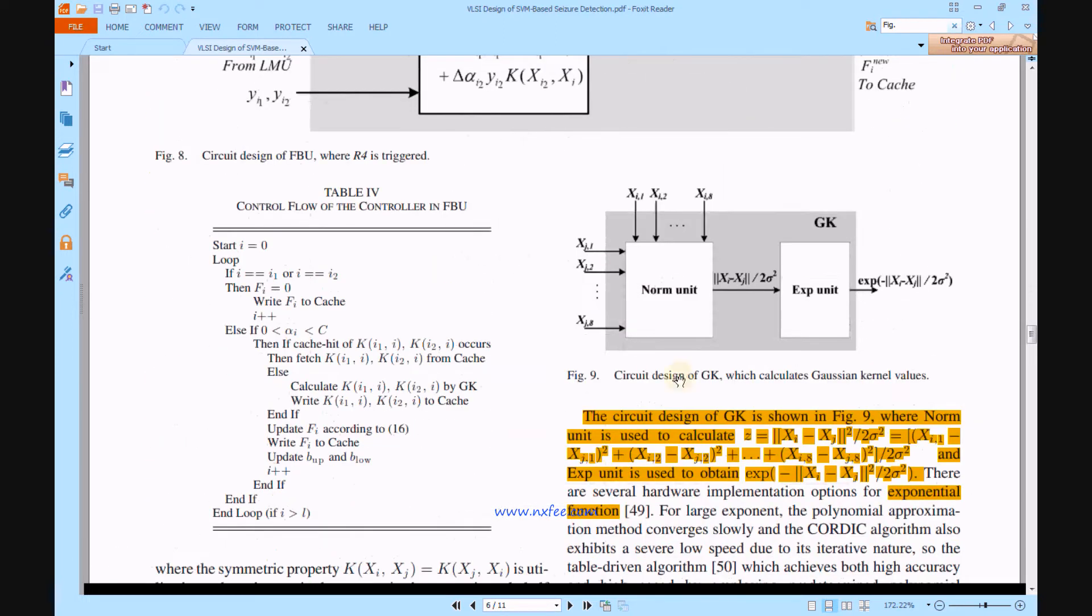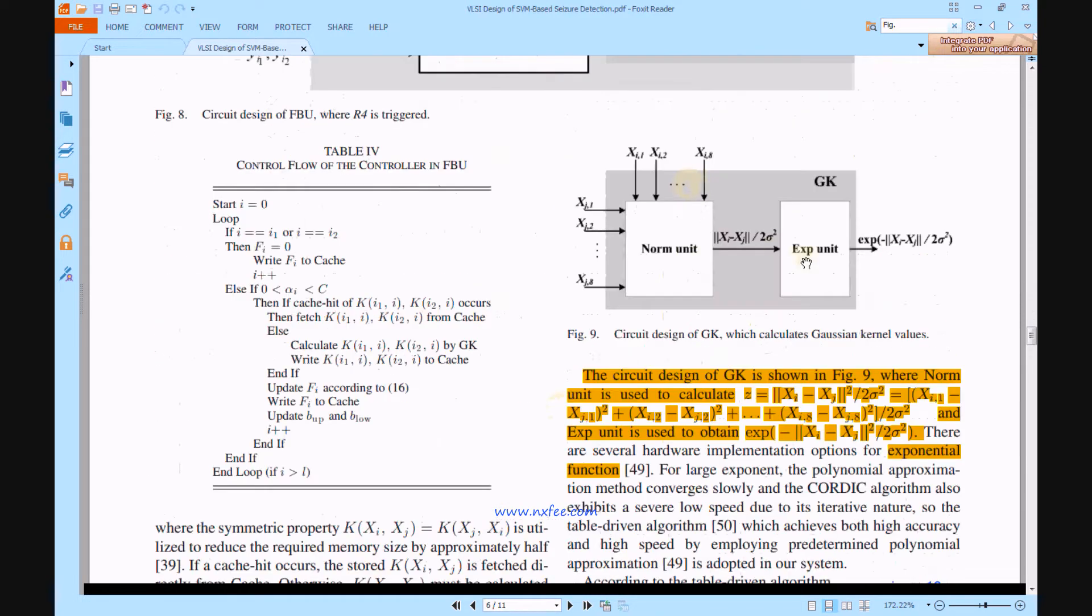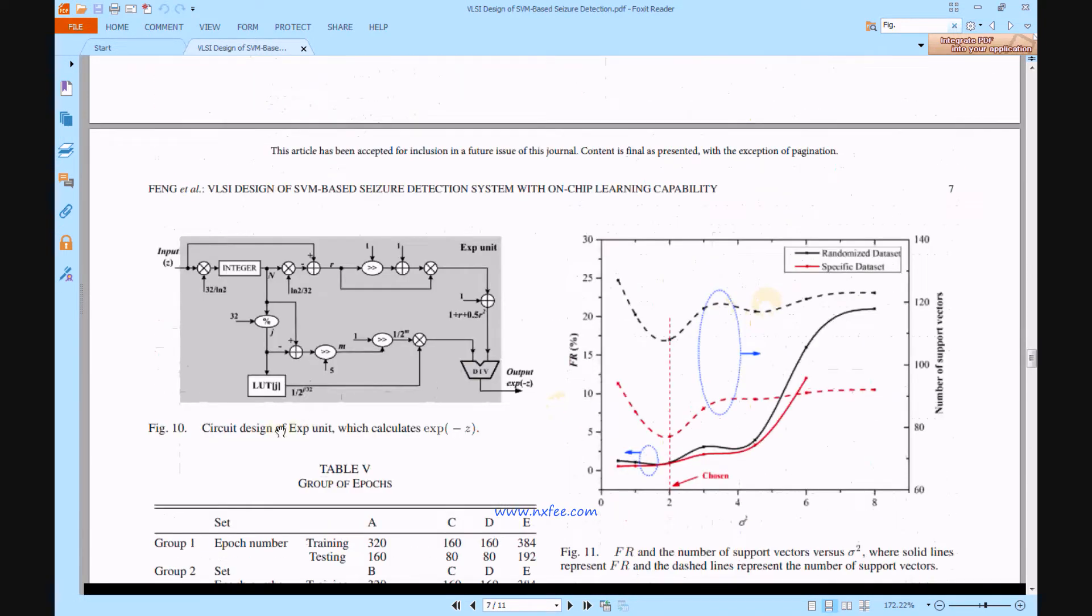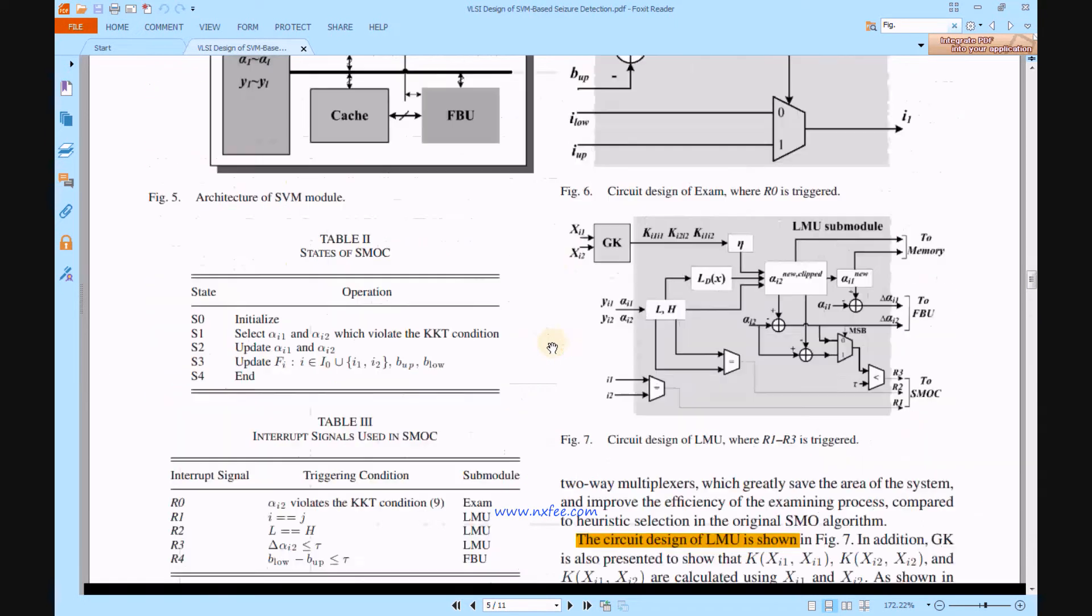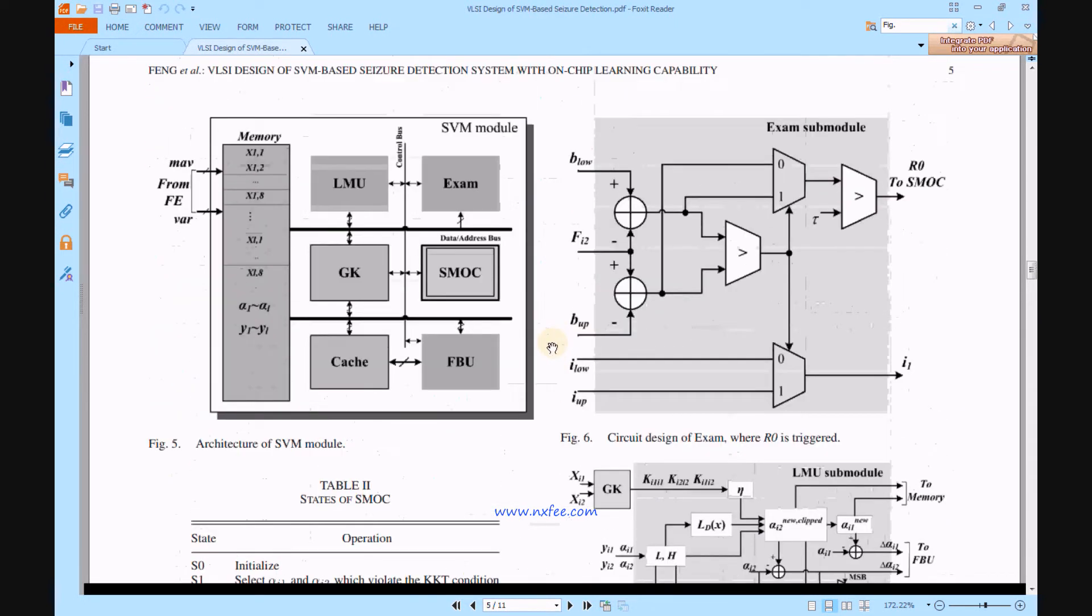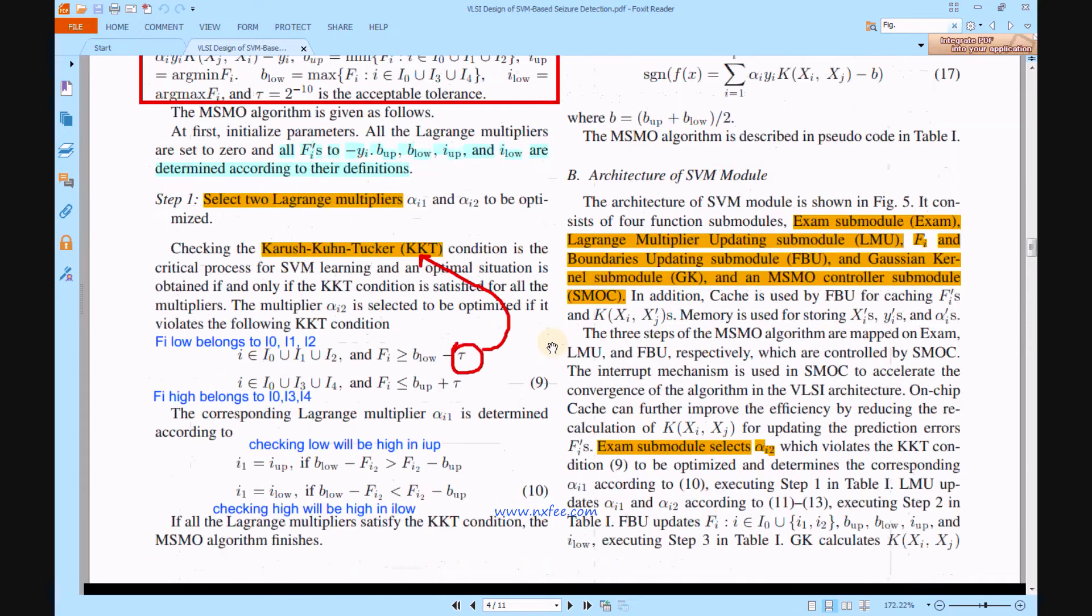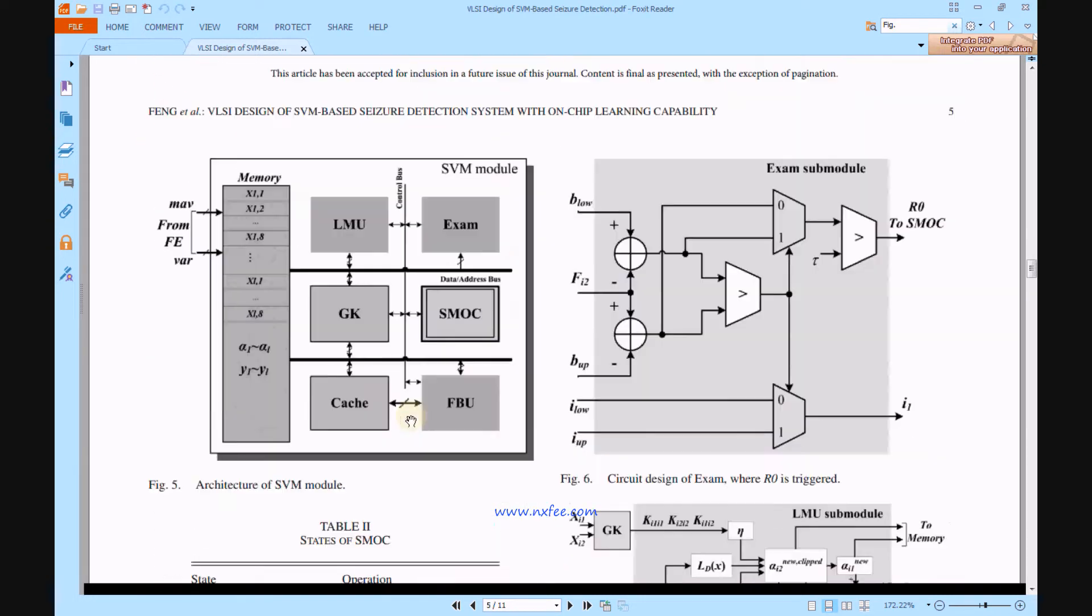All these blocks have architectures given in Figures 6, 7, 8, and 9. GK has a normal unit and expansion unit. The expansion unit architecture is given in Figure 10. Here, they are finding the directions of the seizure using calculations called KKT, Karush-Kuhn-Tucker. Based on this mathematical calculation, the architecture was designed.